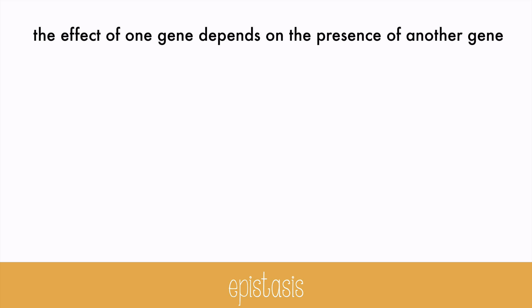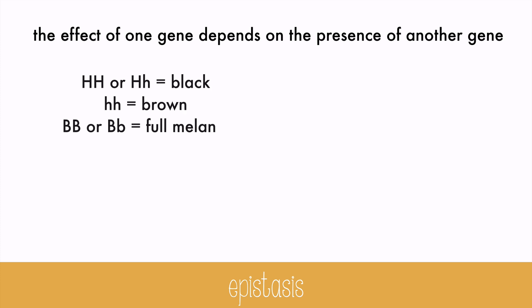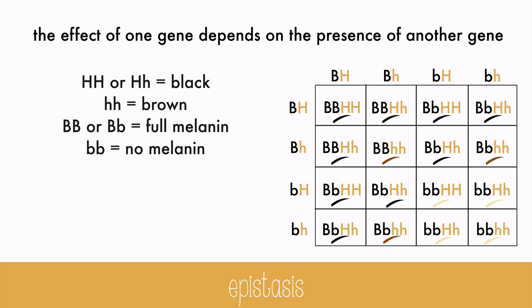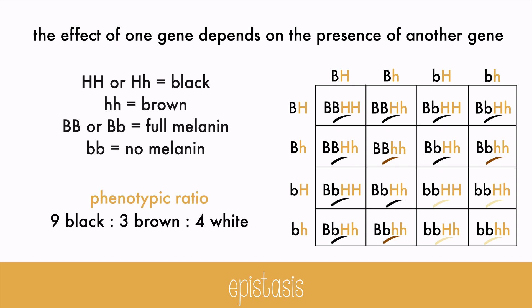Sometimes in a dihybrid cross you don't see the 9-3-3-1 ratio, and it could be because of epistasis — the effect of one gene depending on the presence of another gene. We use the example of fur in Labradors. If they have a dominant colored gene, they get black fur. If it's recessive, it's brown, but they also need the full melanin to show the color. If there's no melanin, then the fur is completely white. So the ratio becomes 9 to 3 to 4 in this kind of epistasis. There are other forms of epistasis, but this is just one example.